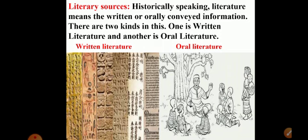Literature, historically speaking, means written records or written documents. It also includes oral records — that is, orally conveyed information or details. There are two kinds of literary sources: written literature and oral literature.